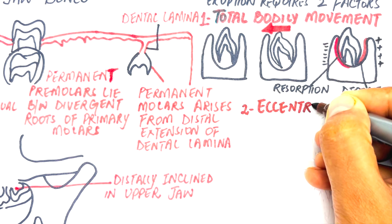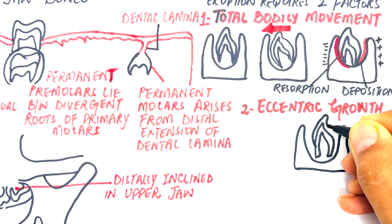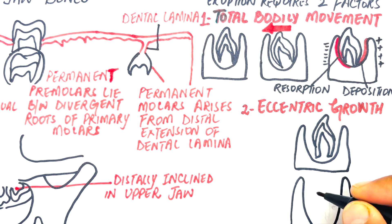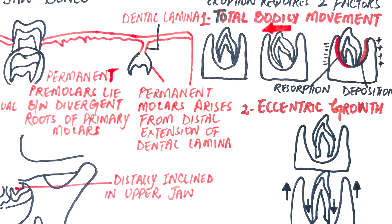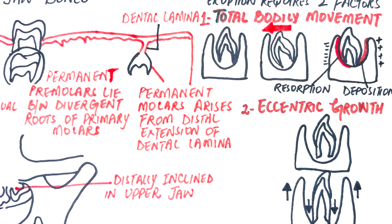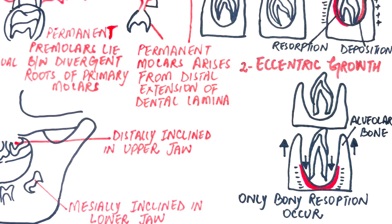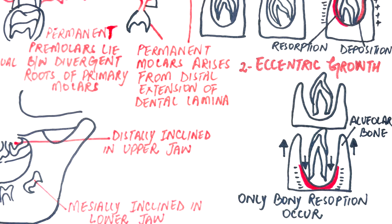In eccentric growth, one part of the tooth germ remains fixed while the rest continues to grow. During eccentric growth, only bony resorption occurs, altering the shape of the crypt to accommodate the altering shape of the tooth germ. For example, after the crown of a tooth is completely formed, root initiation and elongation start, yet the crown maintains a constant relationship with the surrounding alveolar bone. To accommodate the growing root, bone resorption must take place, and the length of the alveolar bone will also increase to compensate for the growing roots. In summary, pre-eruptive tooth movements are intricate processes involving constant adjustments within the developing jaws, ensuring optimal alignment and preparation for eventual tooth eruption into the oral cavity.